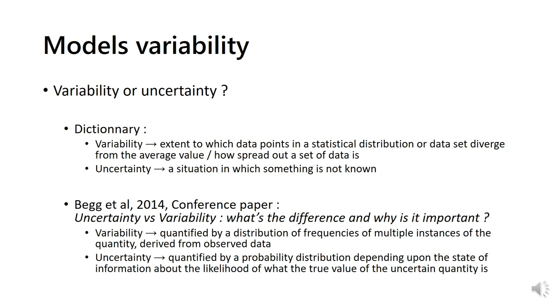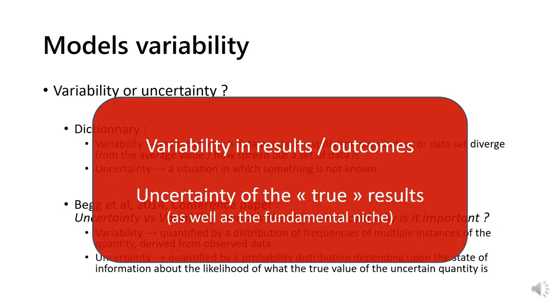Funkeying out into dictionary's definitions, variability is globally defined as the extent to which data points in a statistical distribution or dataset diverge from the average value or how spread out a set of data is. Uncertainty, on the other hand, is a situation in which something is not known. Begg et al. discussed the differences between these two words, and what mainly come out of it, is that variability should be used when speaking of a distribution of quantities derived from observed data, while uncertainty represents a probability distribution of the unknown quantity, more or less precise depending on our state of knowledge. From here, I will talk about variability in results, outcomes, and reserve the term of uncertainty when speaking of the true results of the models, like there is most of the time uncertainty in defining a species' fundamental niche.